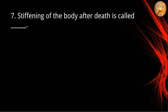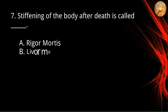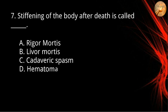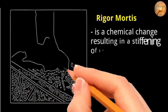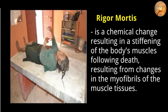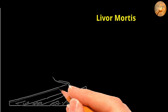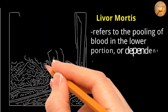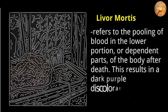Number seven: stiffening of the body after death is called A) rigor mortis, B) livor mortis, C) cadaveric spasm, D) hematoma. The correct answer is letter A, rigor mortis. Rigor mortis is a chemical change resulting in a stiffening of the body's muscles following death, resulting from changes in the myofibrils of the muscle tissues. Livor mortis refers to the pooling of blood in the lower or dependent parts of the body after death, resulting in a dark purple discoloration of the skin.